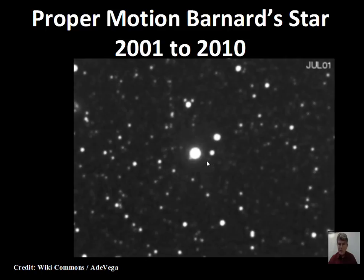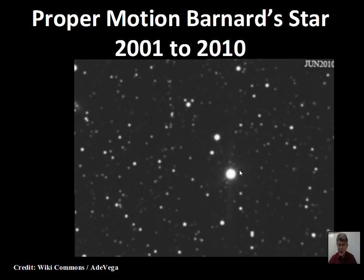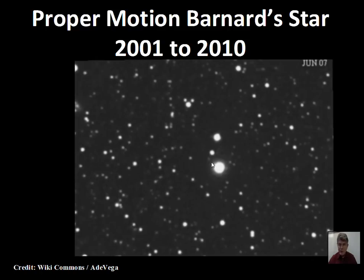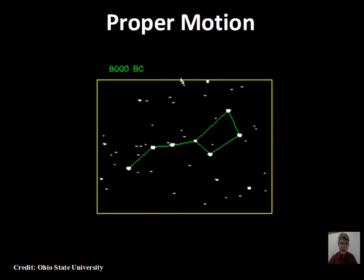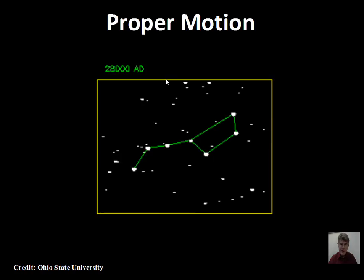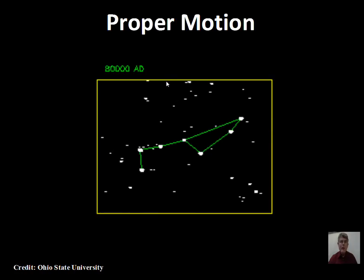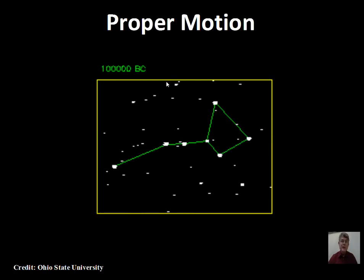An example here of Big Dipper started in the far B.C.s, then going to the A.D.s, and many, many years, 100,000 years B.C.